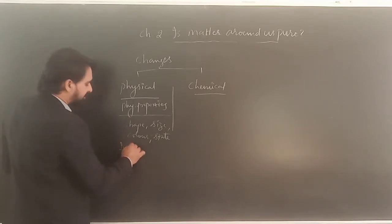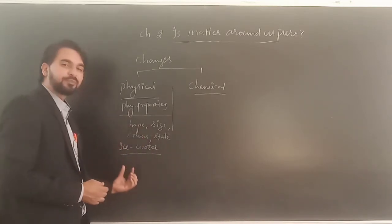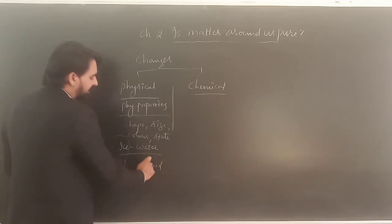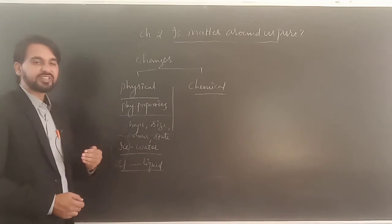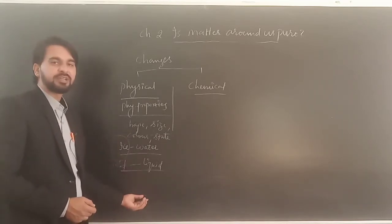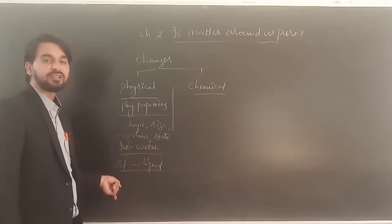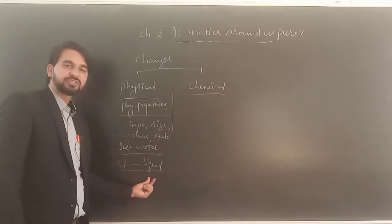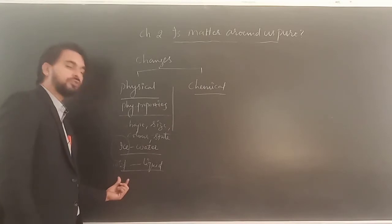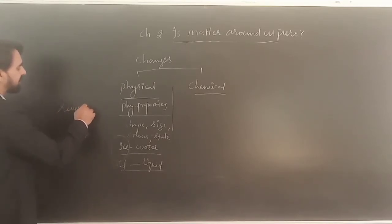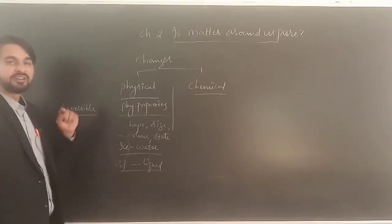For example, conversion of ice into water is a physical change. Here, the state changes from solid to liquid. This change is inter-convertible — if I want the water to freeze, it again gets converted into solid. It means physical changes are reversible changes.